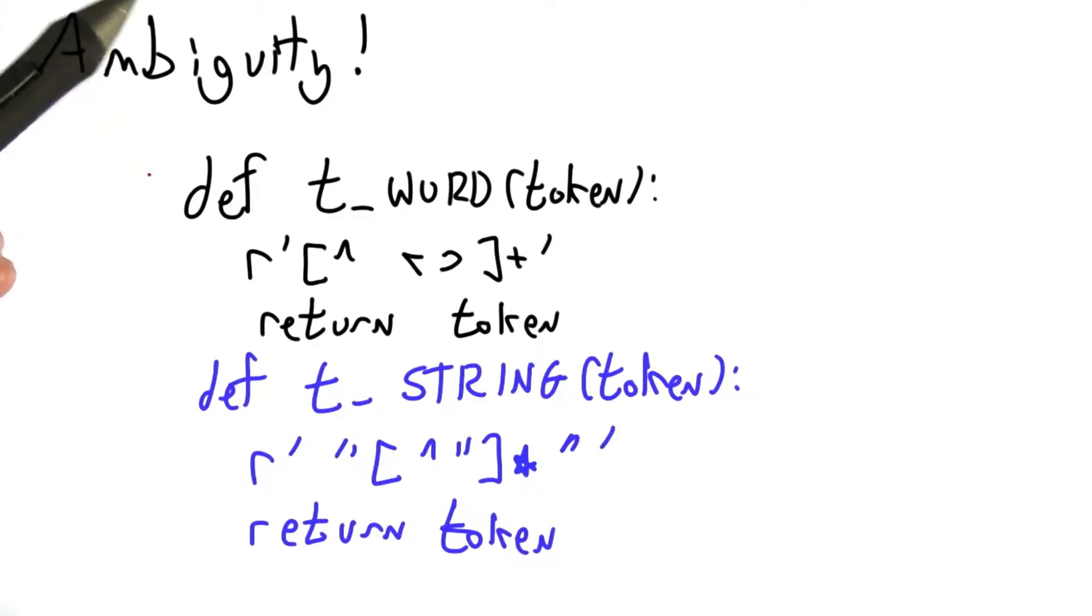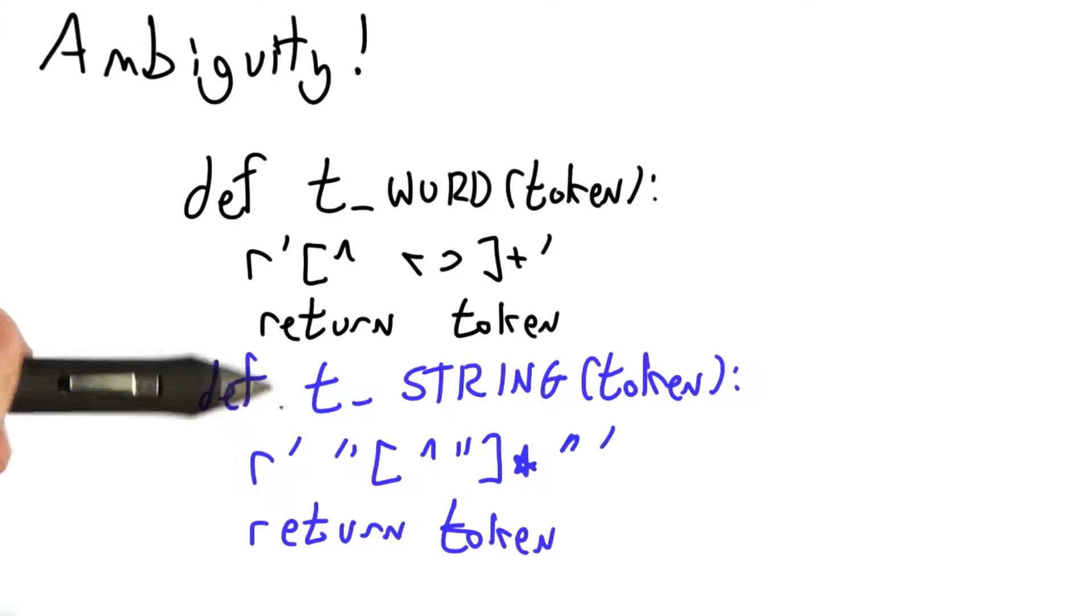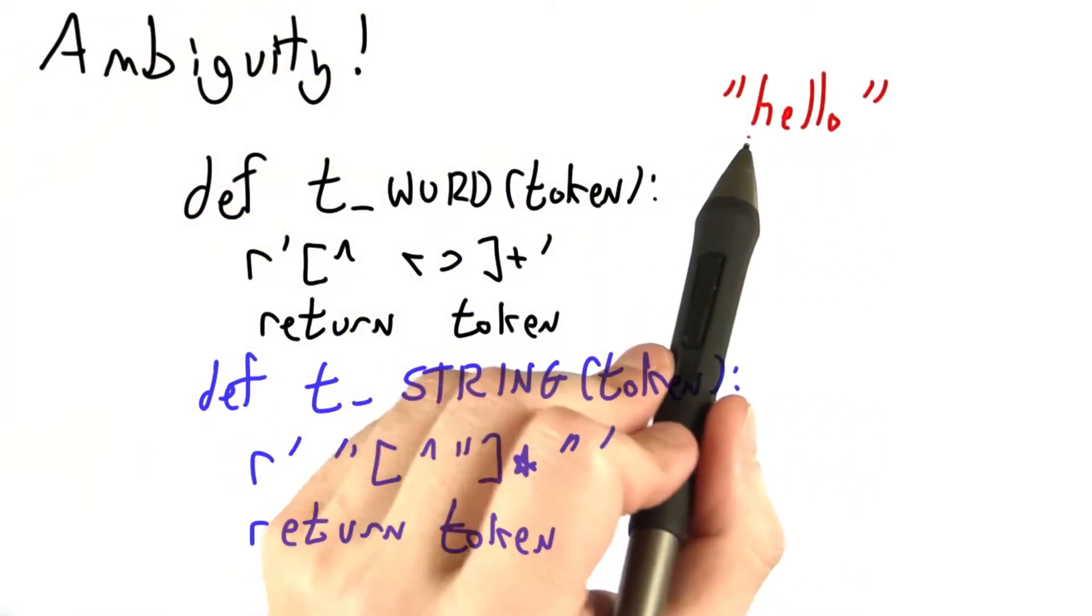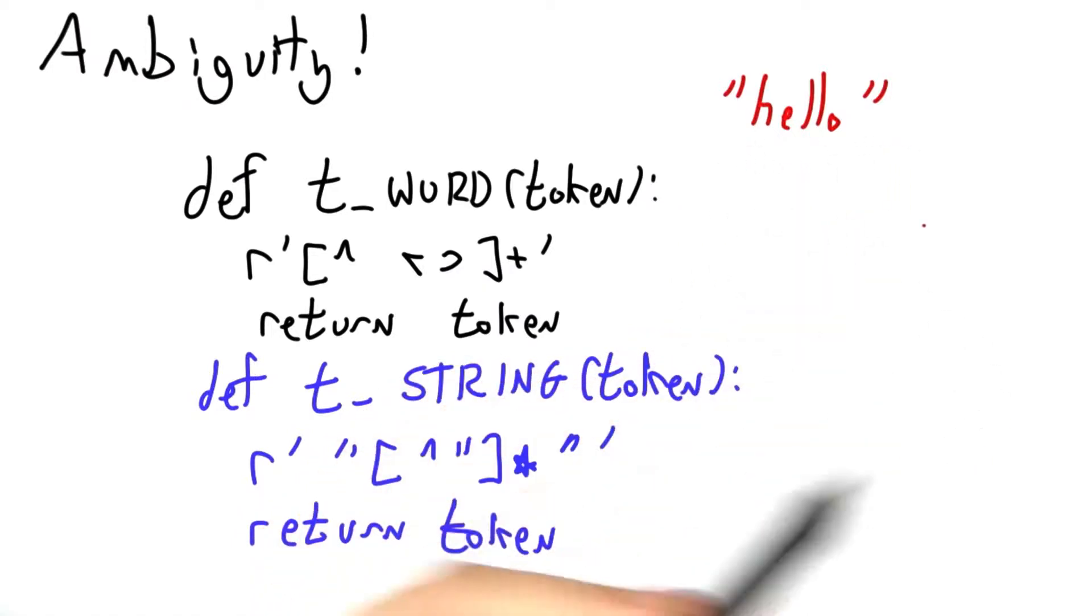As we saw in that last quiz, it's not quite clear what to do when our token definitions overlap. The seven-character sequence, hello, surrounded by double quotes, matches our regular expression for word, but also matches our regular expression for string.